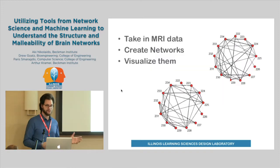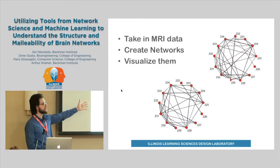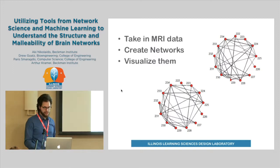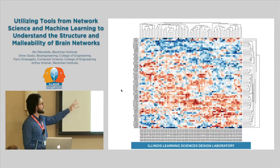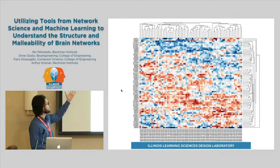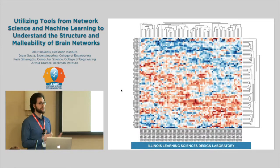The process is pretty simple. We take in this MRI data, create networks based on that data, and visualize them. We can visualize them with simple visualizations like these graphs, or with slightly more complicated ones like this one. This visualization is called a clustergram — it's a technique from genomics. What you're seeing is all of the connectivity data for a large group of subjects in their subcortical network.